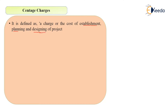What is establishment? For example, in a construction project, you may require a security guard and a cabin for the security guard. You will also require planning and designing costs. So all these costs will come under the category of Centage Charges. They will also include supervision charges — those costs required for supervision at the site.